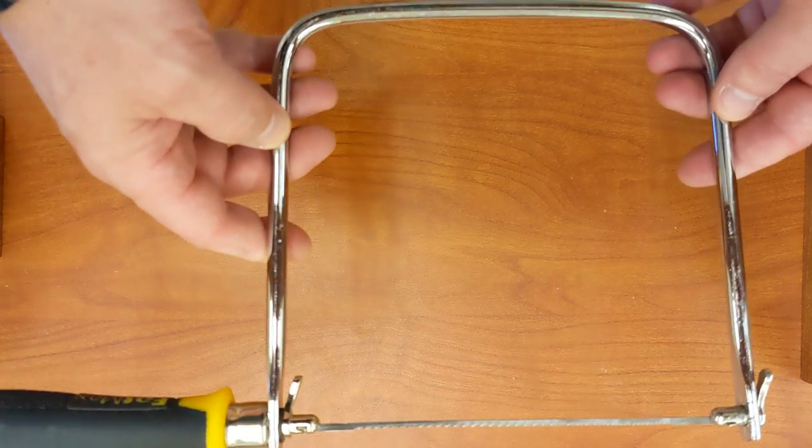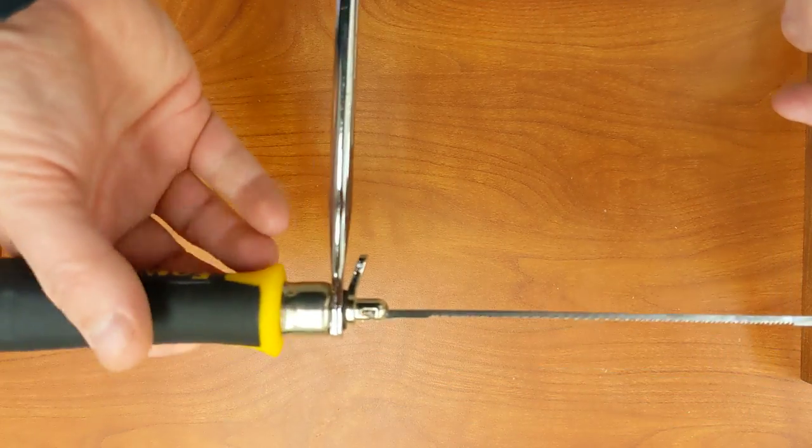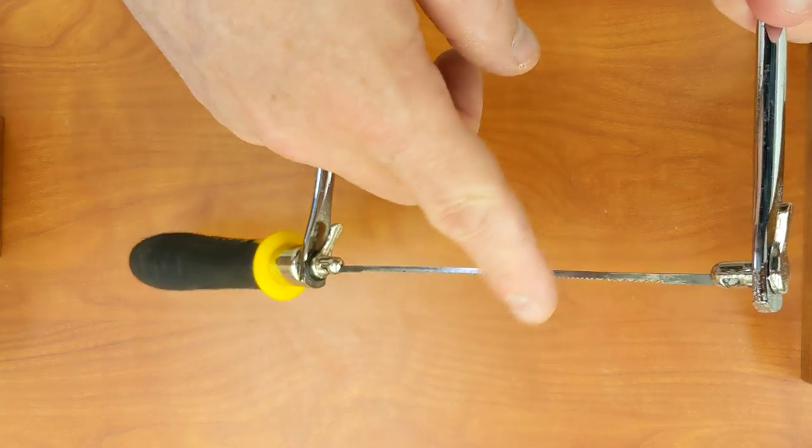Let's start by going over the basic parts of the coping saw. This is the metal frame, this is the handle, and this is the blade.